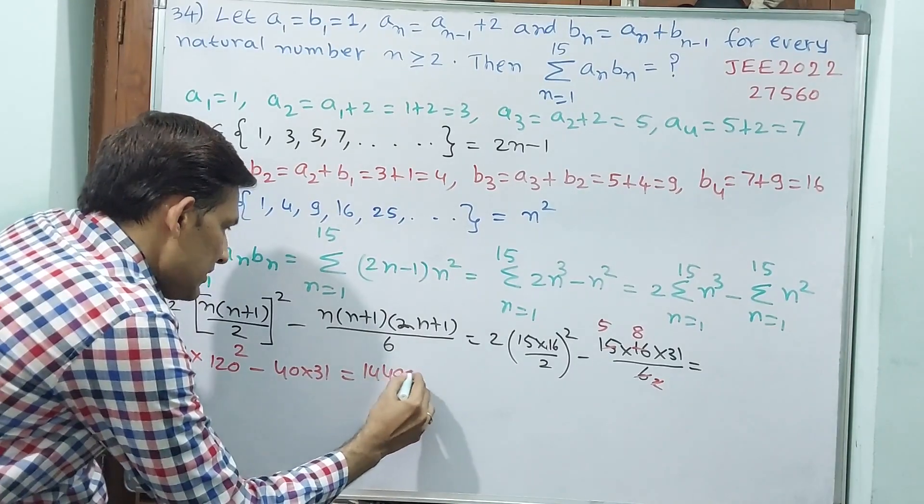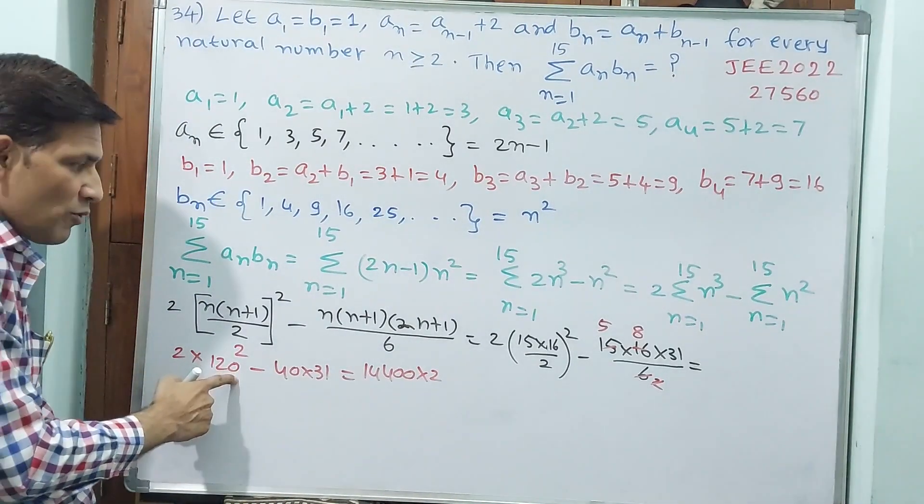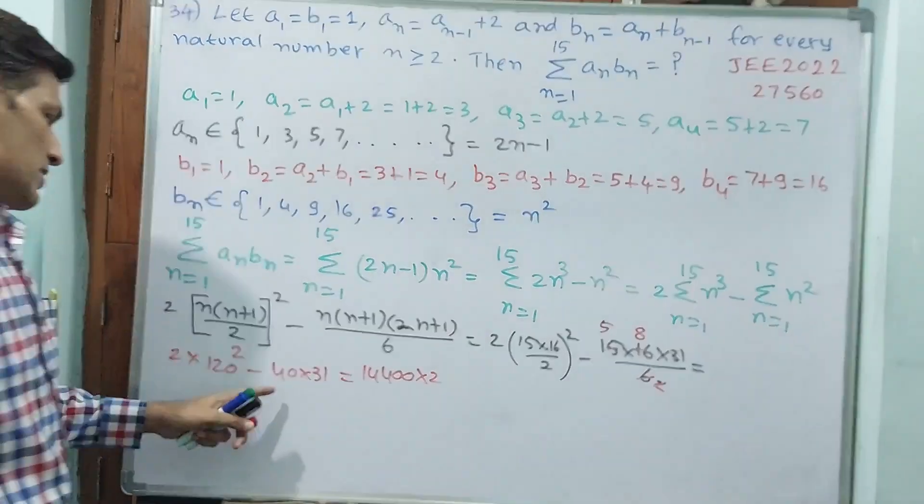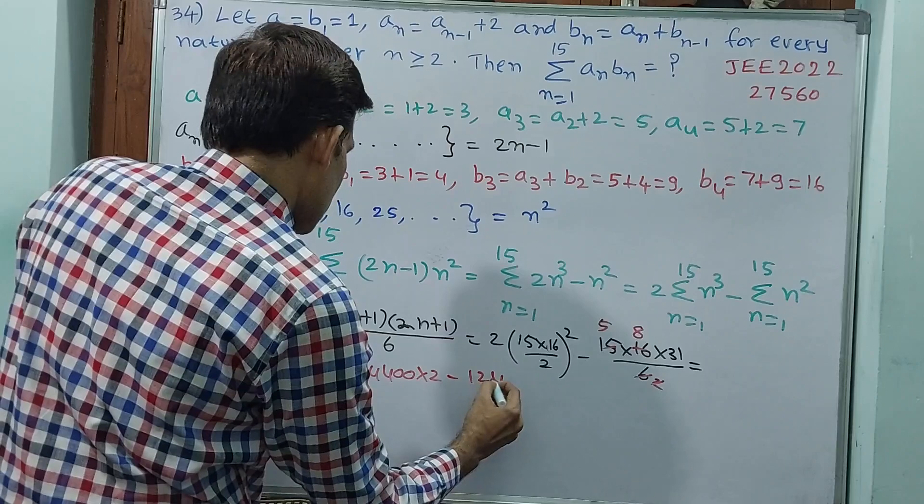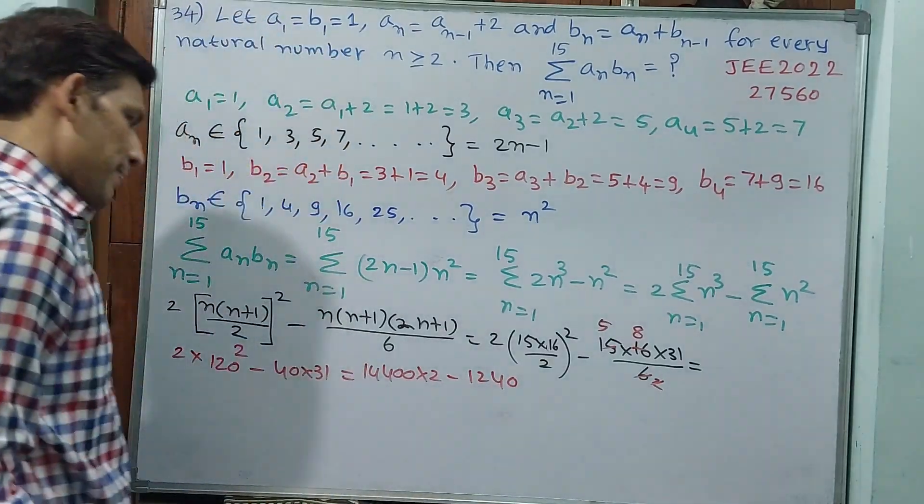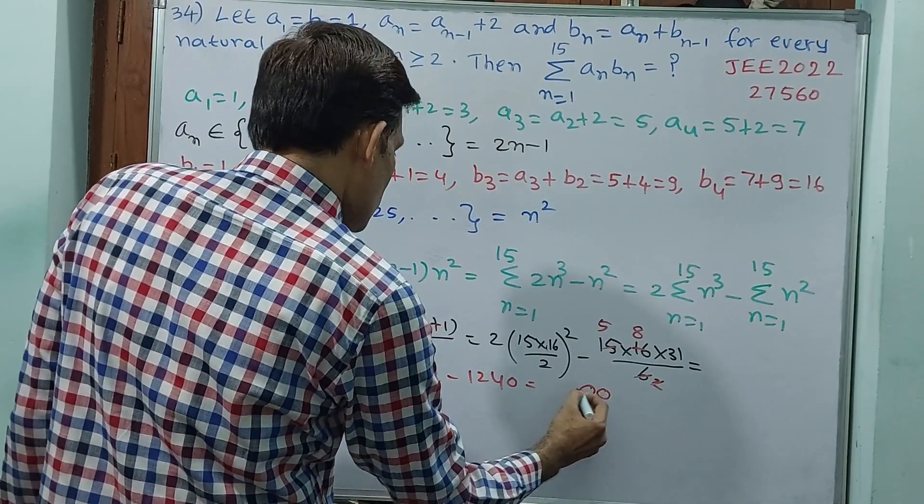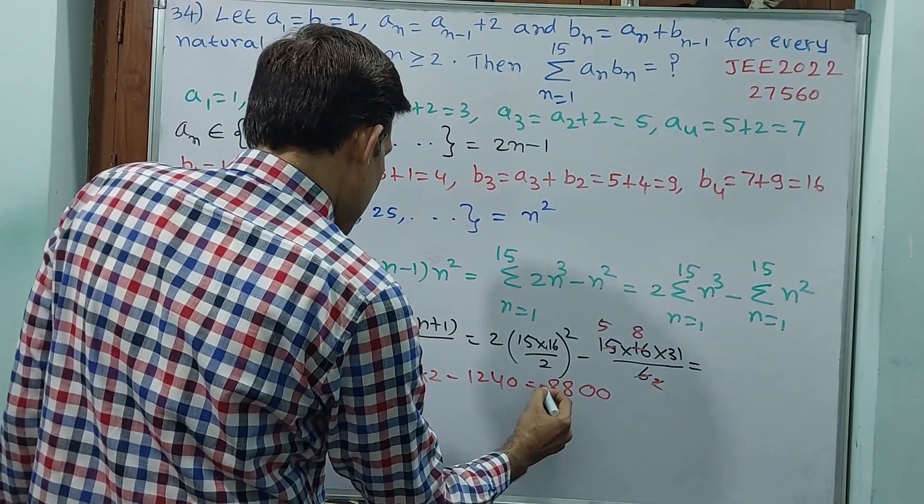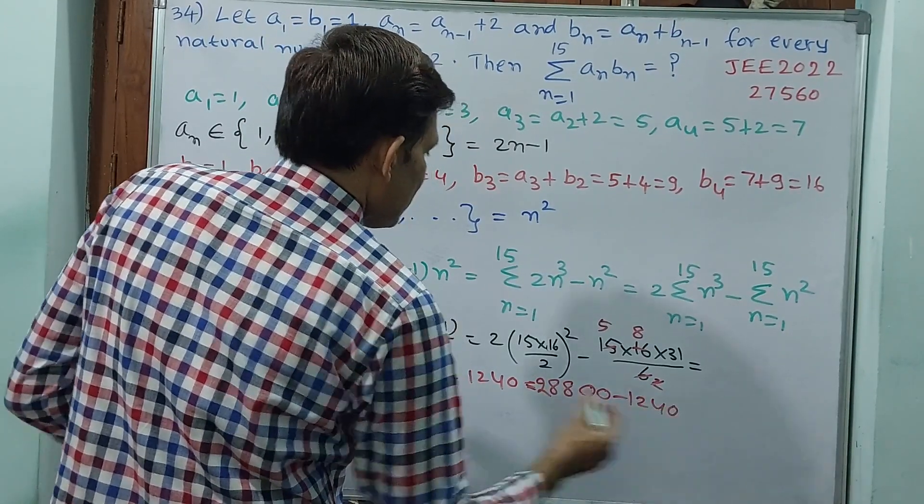Minus, see, 3 twos, 3 fives, 2 eights, 40 into 31. That is equal to, see, 120 square means, it's 144 double 0 into 2. 12 square is 144, 0 means double 0. And here see, 4 ones are 4, 4 threes are 12, and 0, 1240. And also 200, 200, 2 fours are 8, 2 fours are 8, 2 ones are 2, minus 1240.